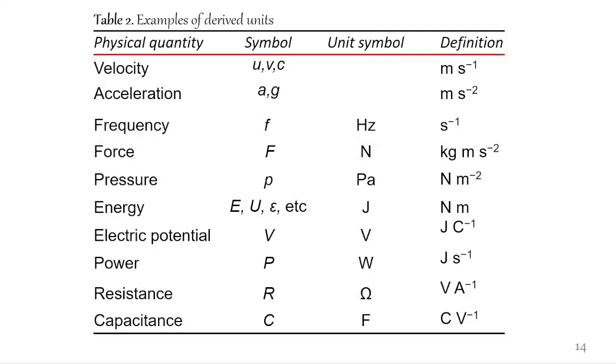There are numerous numbers of derived units and I have shown some examples of them in Table 2. These are derived units. These are physical quantities, symbols, unit symbols, and definitions. The physical quantities represented are velocity, acceleration, frequency, force, pressure, energy, electric potential, power, resistance, and capacitance.